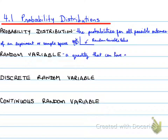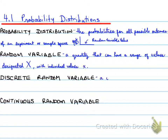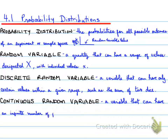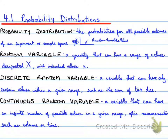Random variable is a quantity that can have a range of values designated X, with individual values as little x. Discrete random variable is a variable that can have only certain values within a given range, such as the sum of two dice. Continuous random variable is a variable that can have an infinite number of possible values in a given range, often measurements such as volume or time.